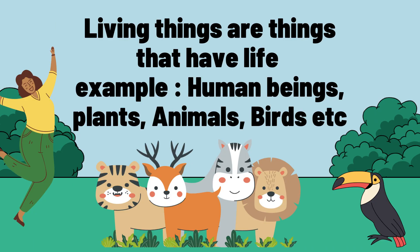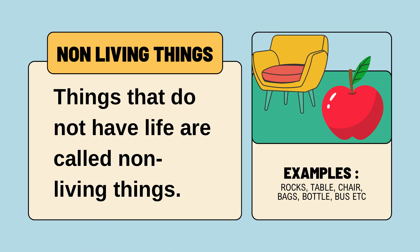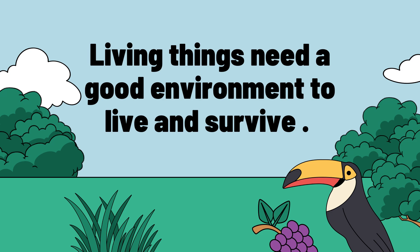Living things are things that have life — things that are living and breathing. Examples include human beings, plants, animals, and birds. Non-living things are things that do not have life, do not breathe, and are things we use around us in our surroundings, such as rocks, tables, chairs, bags, bottles, and buses.